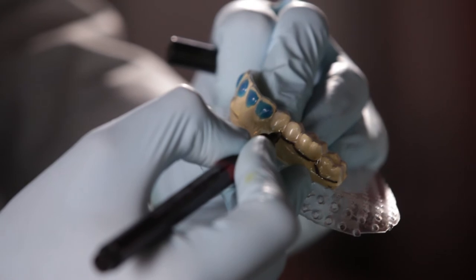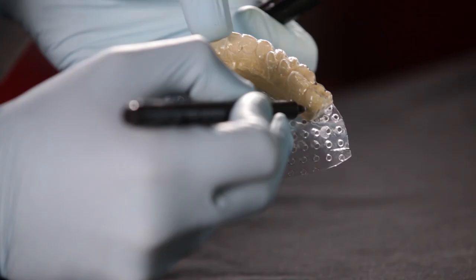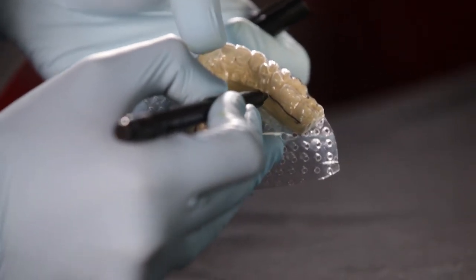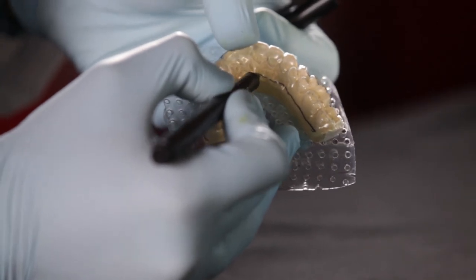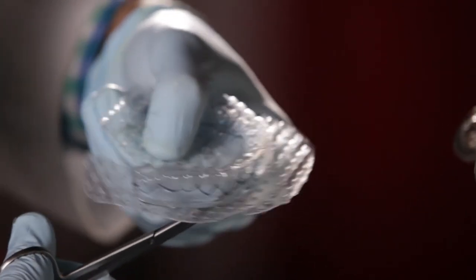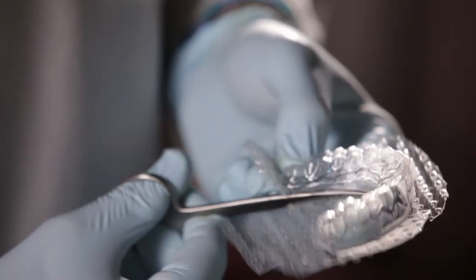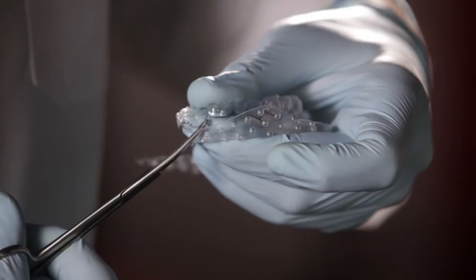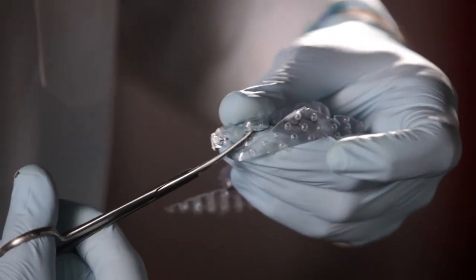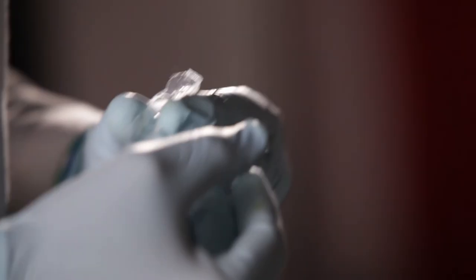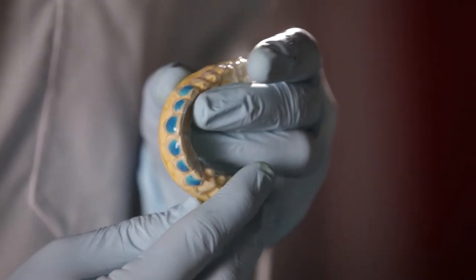Now I'll just take a marker and mark the gingival margins on the facial aspect. This is going to be a reference when I'm cutting the tray. On the palatal side, you can cut the tray along a straight line. Cut it along the markings with a sharp pair of curved scissors. We now evaluate the tray for any rough edges and perfect fit.